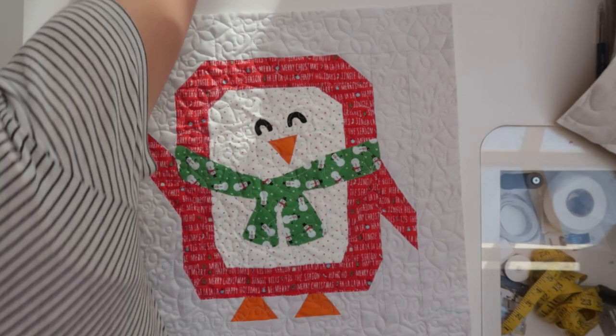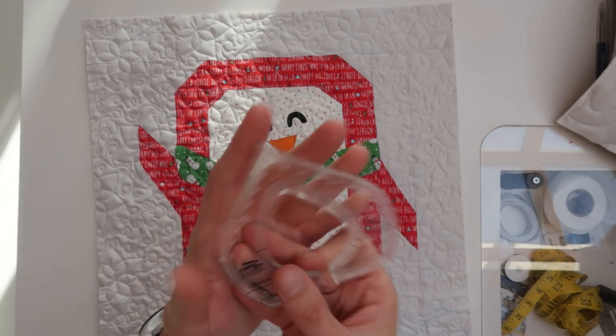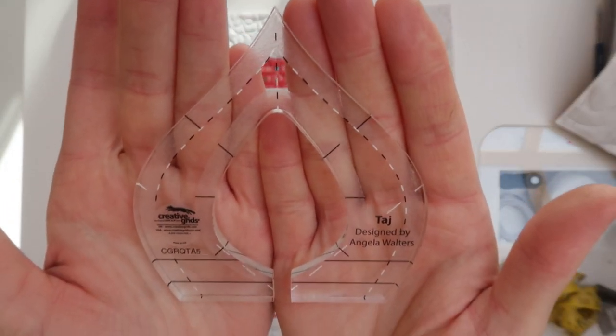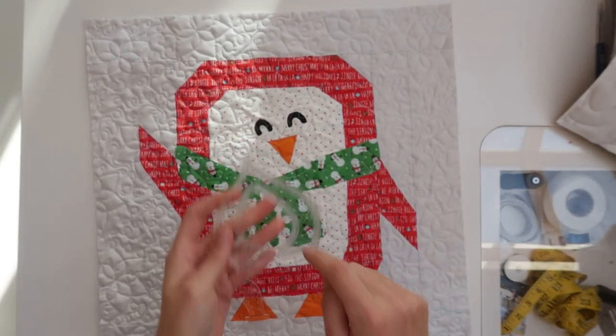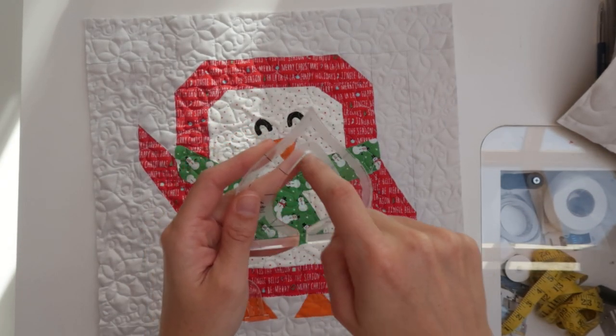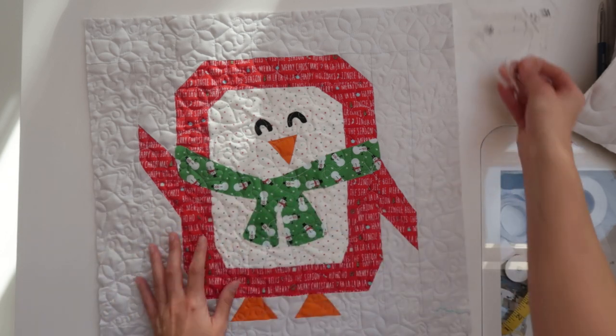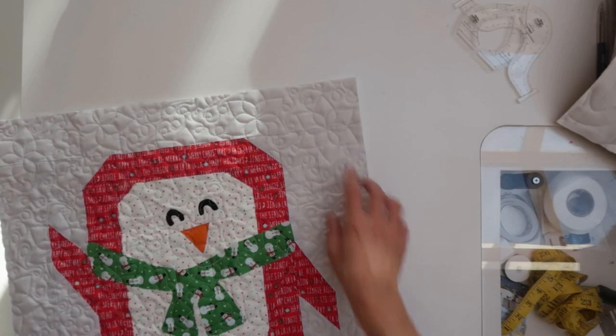And the ruler I used for that is this Tosh ruler by Angela Walters. I love it. And then you use the inside. I also have a video on that from the one two three quilt along where I show you how to do the flower.